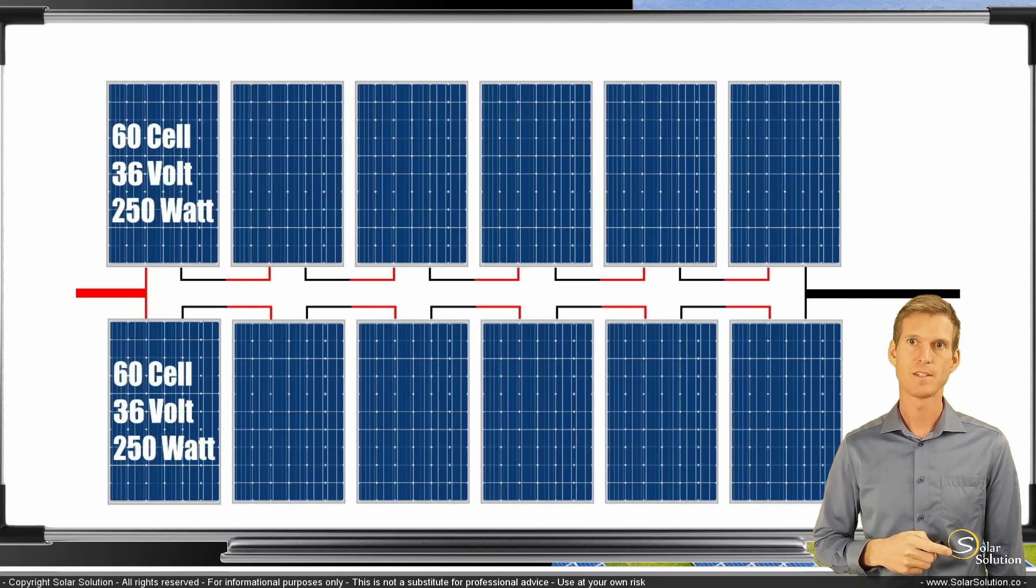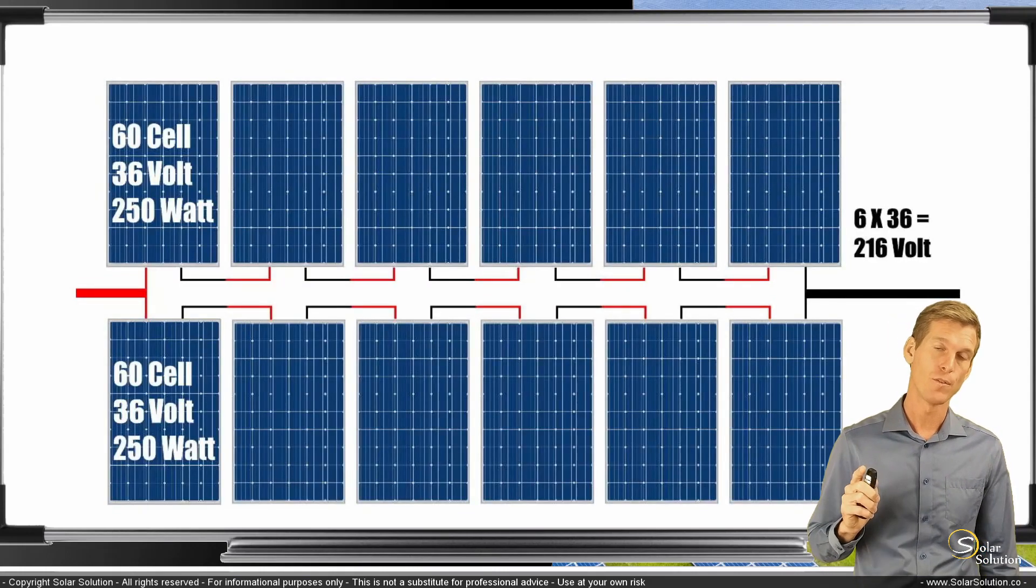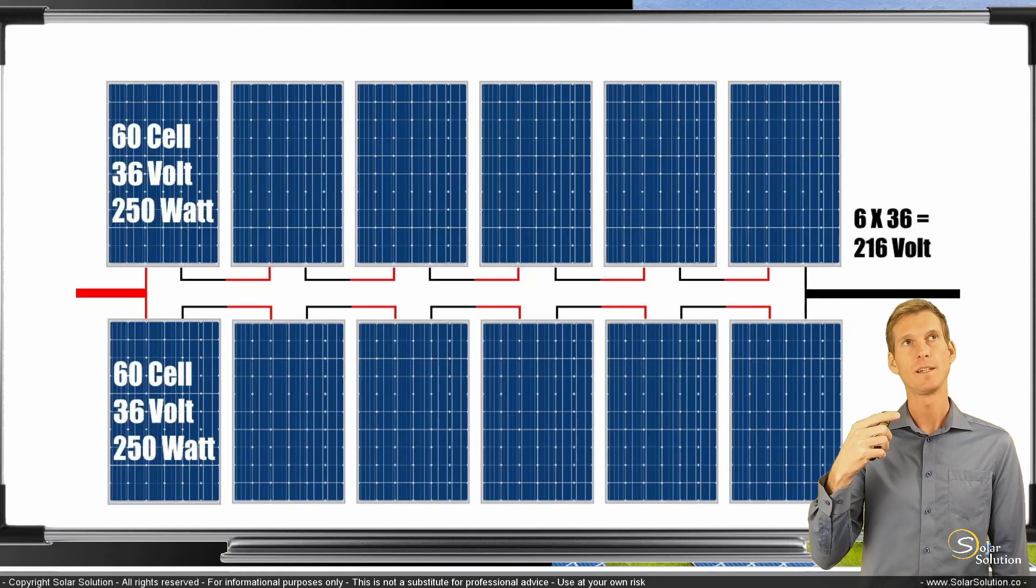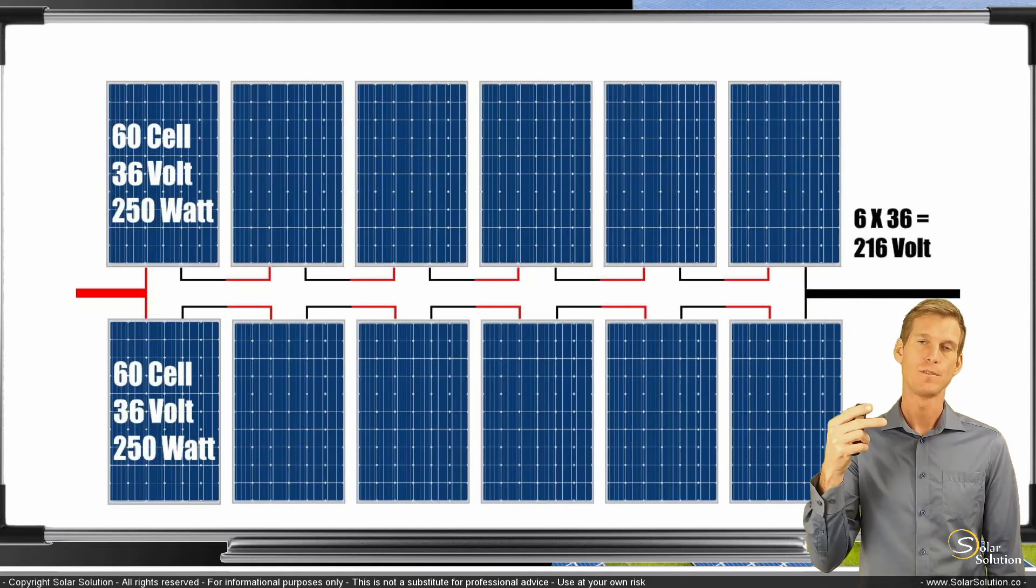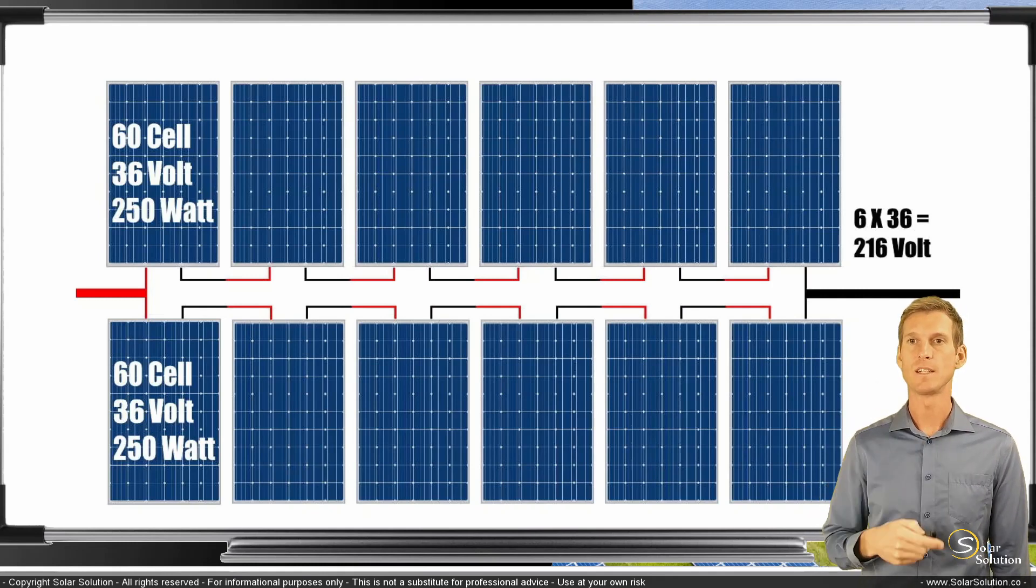Now the open circuit voltage is still the same as if it were only six panels. In theory it should be 6 times 36 volts equals 216 volts open circuit voltage for all of these 12 panels combined together in one array because you are not increasing the voltage if you're adding panels in parallel. So the open circuit voltage of the 12 panels is the same as that of the six panels.